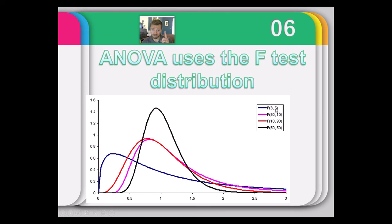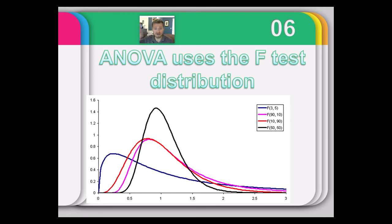With the t-test, we only had one degree of freedom term because there were only two groups. Now we have to account for the number of groups, which affects degrees of freedom, and the total number of people. The number of groups will primarily show its effect in the numerator degree of freedom — the between-groups part. The person effect shows in the denominator — the residual, or within-groups part.